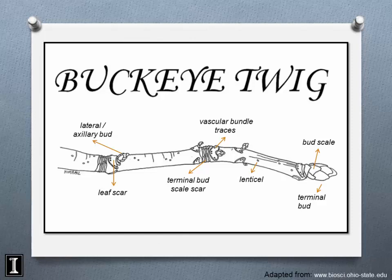On most buds there are bud scales, though some buds are naked with no scales. Terms like imbricate describe how the scales are arranged. Lenticels on the twigs help differentiate species like shellbark hickory from shagbark hickory — shellbark will sometimes show a slight orange hint in its lenticels.